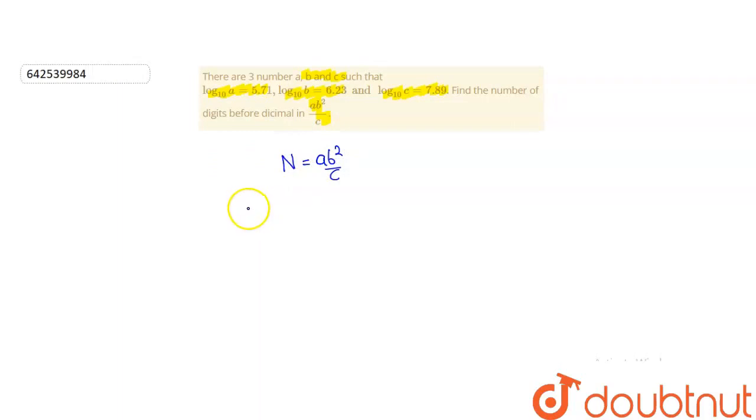Taking log on both sides, we get log N equals log of A times B squared divided by C. As we know that log of A times B equals log A plus log B, which gives us log A plus log B squared minus log C.